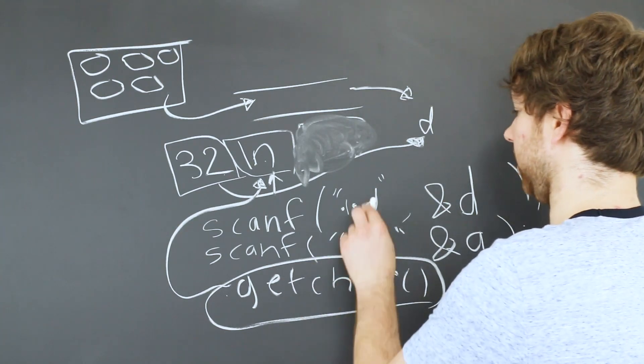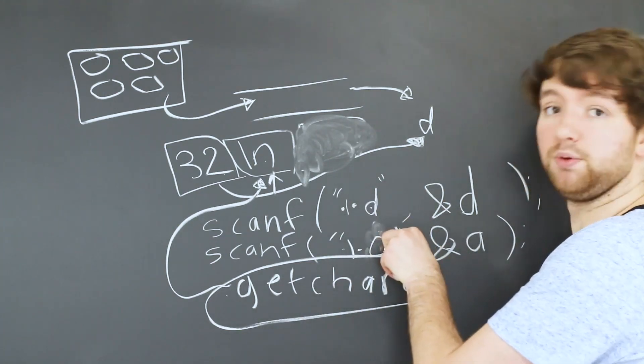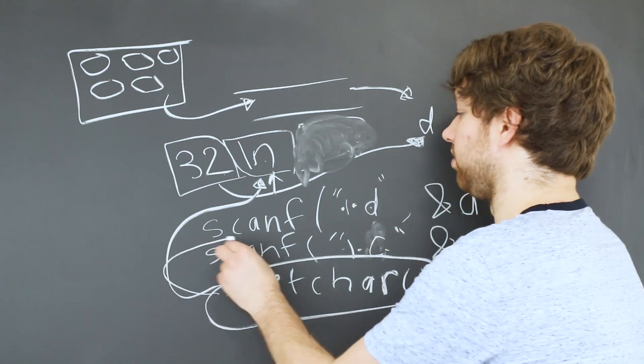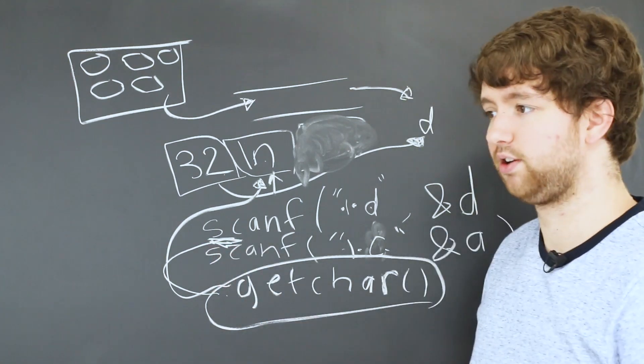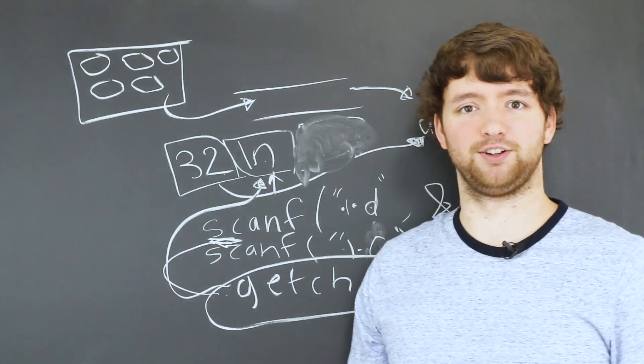So you're going to want to put this in between any scanf where you assume there might be an issue. So in this situation, if we wanted to get a number and then we wanted to get a character, we would want to flush that input stream using getchar or getcar. I like getcar because it sounds like you're going to go get a car.